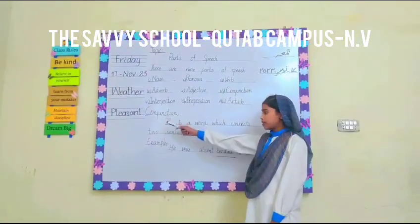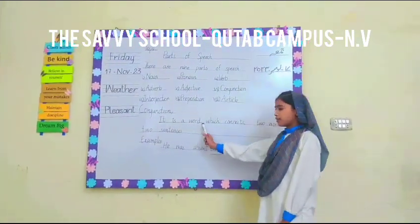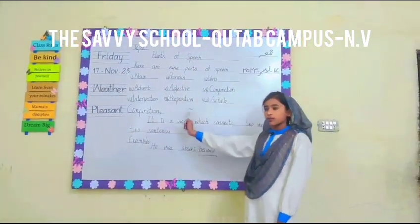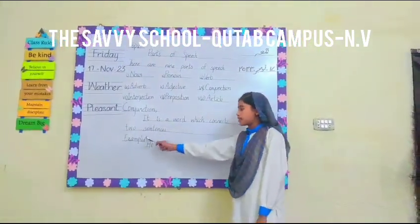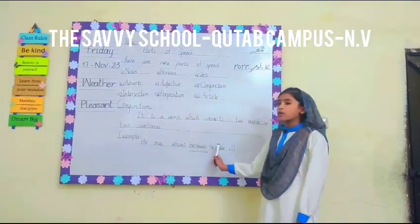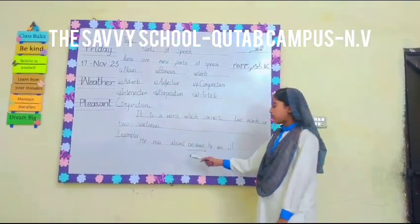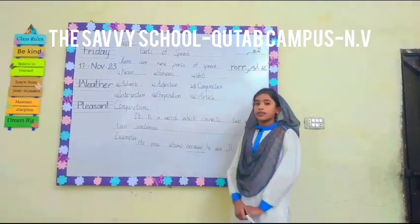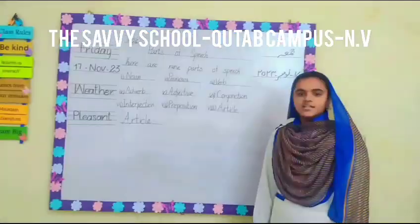Conjunction. It is a word which connects two words or two sentences. For example: 'He was absent because he was ill.' 'Because' is the conjunction.